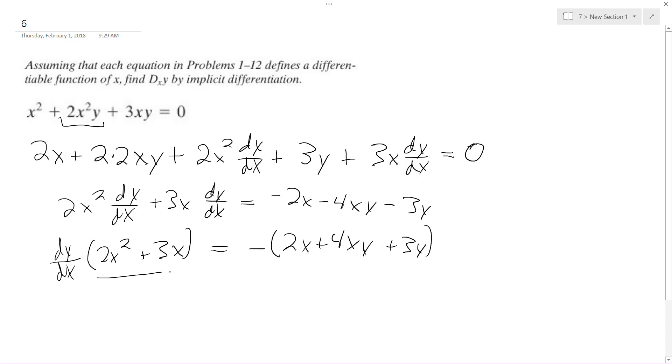Then I divide through by 2x² plus 3x so dy/dx is by itself, and then I have 2x² plus 3x in the denominator. That's it, this is the solution right here.